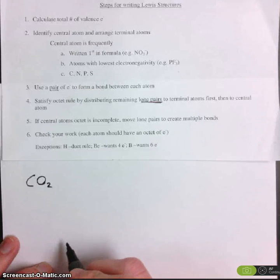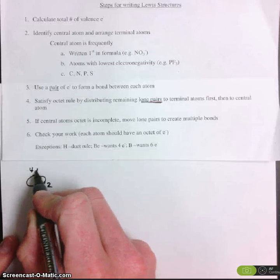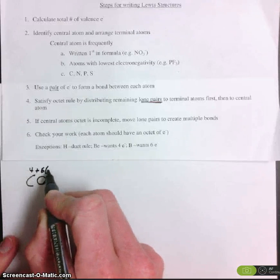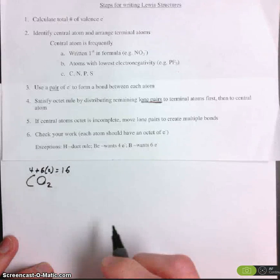Step number one, calculate the total number of valence electrons. Carbon has four, oxygen has six, and we have two oxygens. So that's a total of 16 electrons.